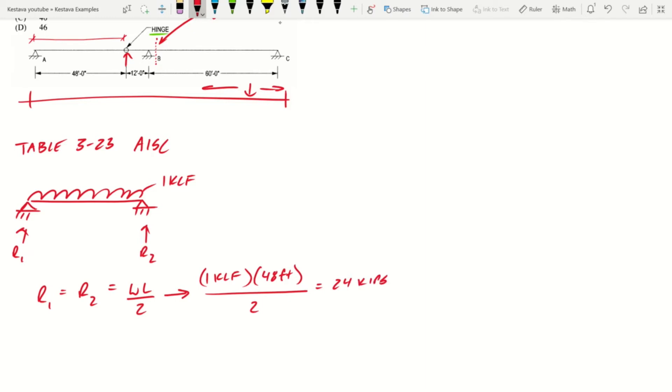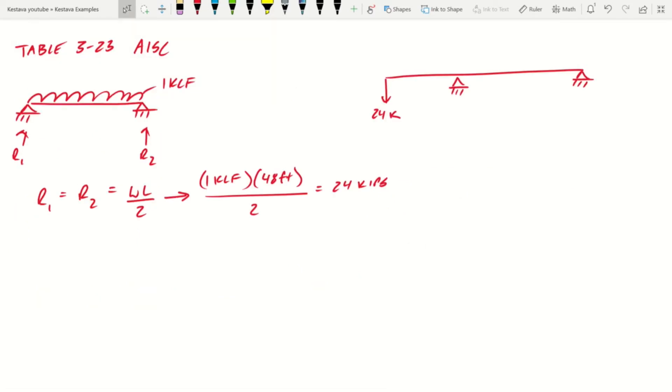That gets us 24 kips as a reaction at the hinge. So now what we can ultimately look at is a system like this. Well, now that looks an awful lot like a propped cantilever. So next thing we're going to do is go to the same table,